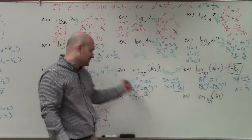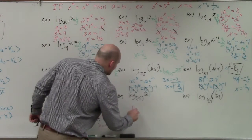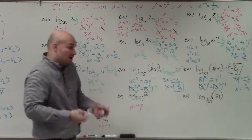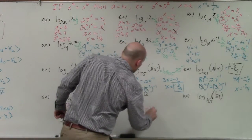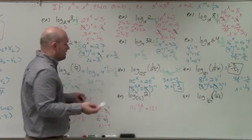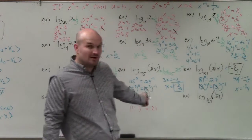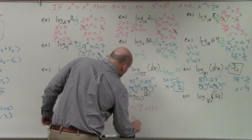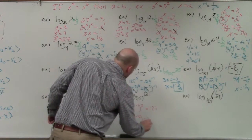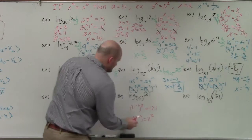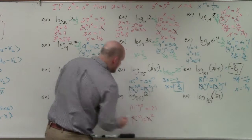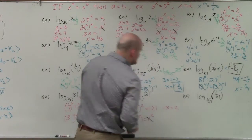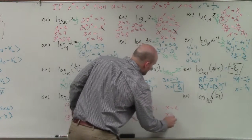For the next one, I rewrite 1/11 as 11 to the negative first power. So 11 to the negative first power raised to the x equals 121. Since 121 is 11 squared, using the one-to-one property, negative x equals 2, so x equals negative 2.